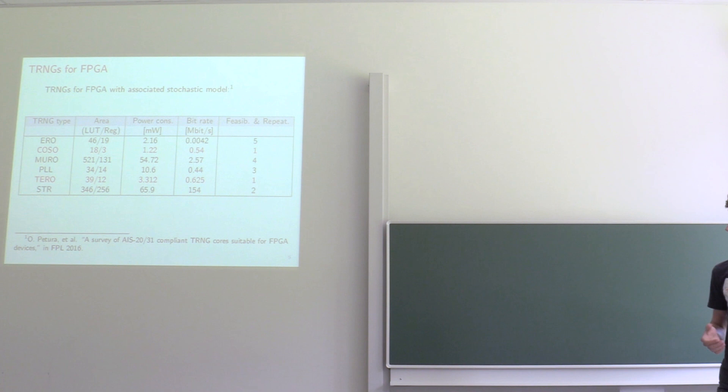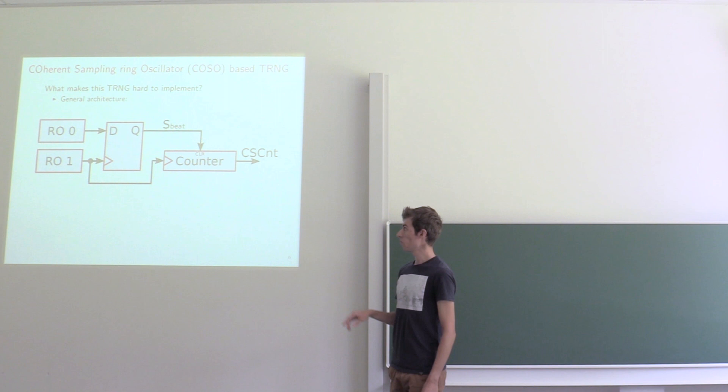But why do they require such a design effort? To explain this we have to look at the internal working. We will focus on the first one, the current sampling one. So how does it work? You have two ring oscillators. One samples the other using a D-flip-flop.